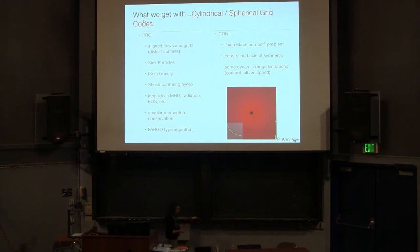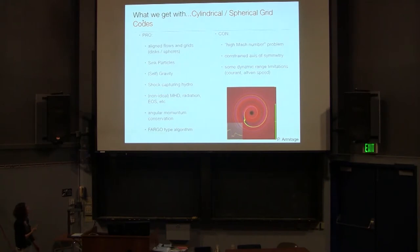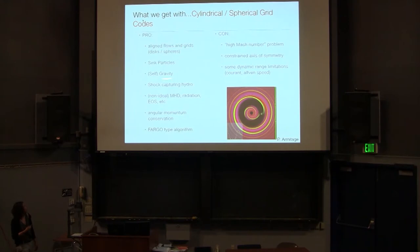One of the things we've been talking about is the problem with geometry. If you were simulating disks, you might think: what if I don't use a Cartesian grid? What if I use a cylindrical grid? That has some advantages — it means that your flows are aligned naturally with the geometry of the grid, which can be very advantageous, particularly if you implement schemes that account for the fact that your gas is mostly in Keplerian rotation. You can still put in sink particles, self-gravity, and the same shock-capturing hydro. The other big advantage is that you can actually explicitly conserve angular momentum as opposed to linear momentum, which is very important for disk-type calculations.